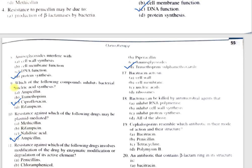Question number 17: Bacitracin acts on — A, cell wall; B, cell membrane; C, nucleic acid; D, ribosomes. The correct option is A, cell wall. Bacitracin is a polypeptide antibiotic that acts on the cell wall, but its action is different from penicillin — it does not compete for the penicillin binding sites present in the cell wall. Question number 18: Bacteria can be killed by antimicrobial agents that inhibit RNA polymerase, inhibit cell wall synthesis, or inhibit protein synthesis. All options are correct, so option D, all of the above, is correct.